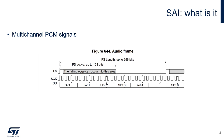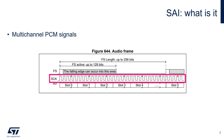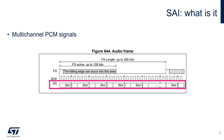We still have three signals: a word select or frame select, a bit clock, and a data line. As you can see from the picture, in each frame you can fit more than two channels.